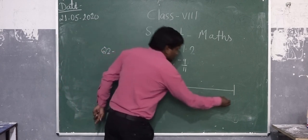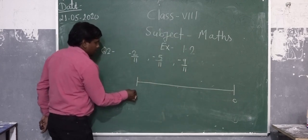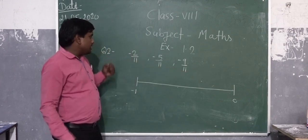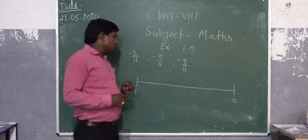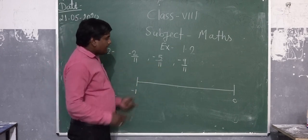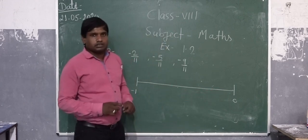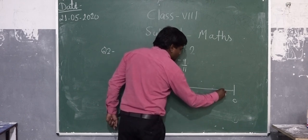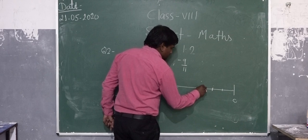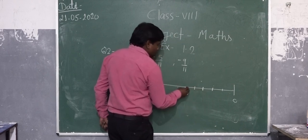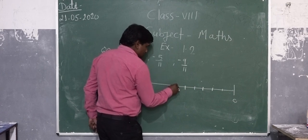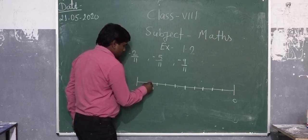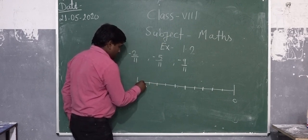We put 0 here and minus 1 here. All the denominators in these numbers are 11, so we divide this line into 11 parts. We start from here: 1st part, 2nd, 3rd, 4th, 5th, 6th, 7th, 8th, 9th, and 10th.